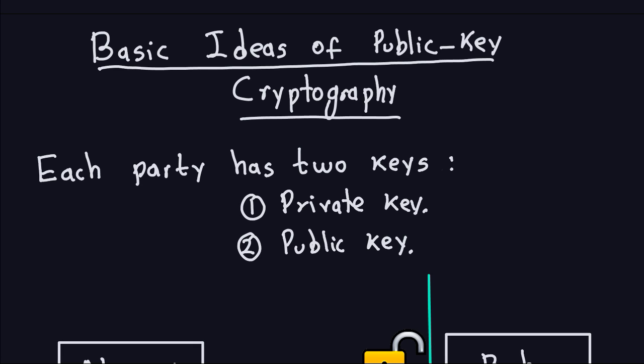Hello and welcome again. In this video we will discuss the basic ideas of public cryptography, or what is also called asymmetric cryptography. This is the most important idea we are going to discuss. Remember that in symmetric cryptography we have the same key for encryption and decryption, and the problem is of course sharing the key, along with the other problems we also discussed.